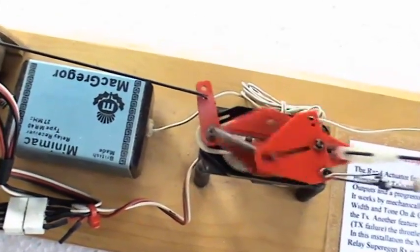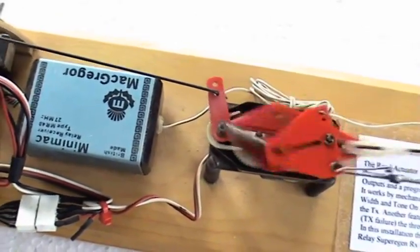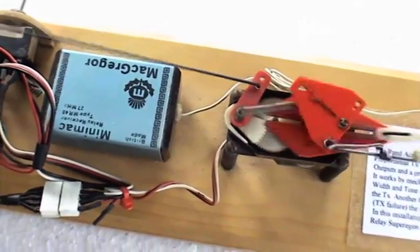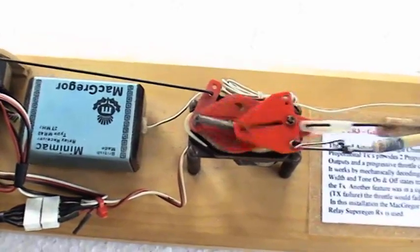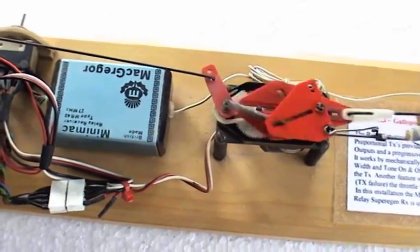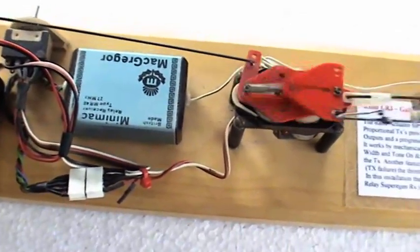And then throttle. One feature of this actuator and the system, indeed, is if you turn the transmitter off, you'll see our throttle fails there. There we go. That was a nice benefit of the system.